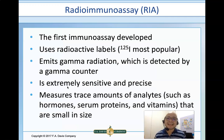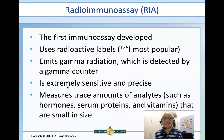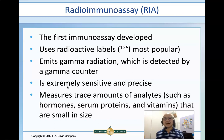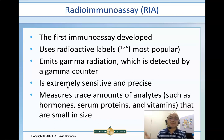The first immunoassay ever developed was radioimmunoassay, more popularly known as RIA. In RIA, we use radioactive labels, wherein iodine-125 is considered the most popular. The principle of RIA is that the binding of the immune complex, since it is radiolabeled, will emit a gamma radiation, which can only be detected by a special machine known as the gamma counter.